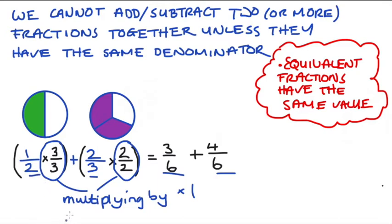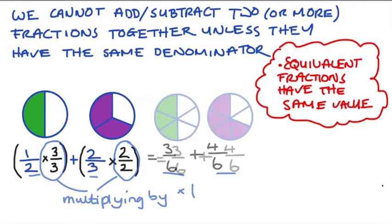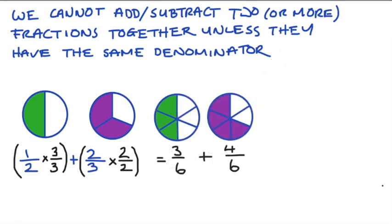We can see this visually if we look at representing the new fractions with our circles, and you can see that, when contrasted to the original circles that we drew, the new fractions shade out exactly the same proportion. In both cases, we have the same value that we had before, just expressed in terms of 6.